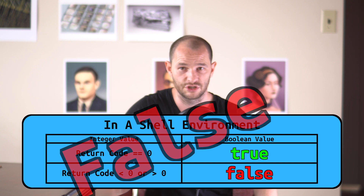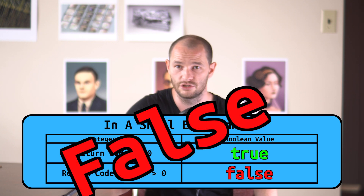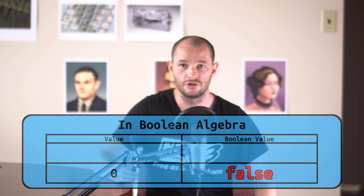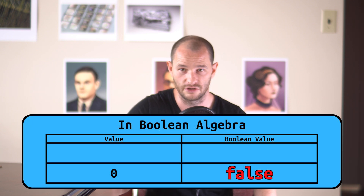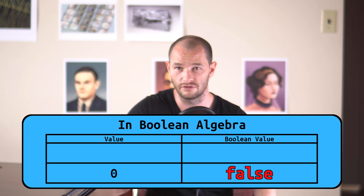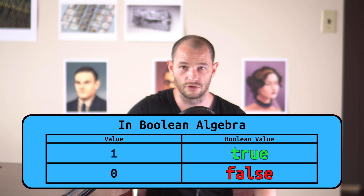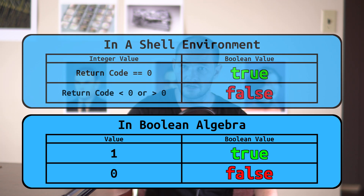However, outside of a shell environment, the previous statement is totally false. In traditional Boolean logic, the integer value 0 is typically associated with the value false, and the integer value 1 is associated with the value true — the complete opposite assignment compared to the one used in a shell environment. This might seem a bit confusing, but all you need to remember is that the true command always returns true, except for when it returns false.